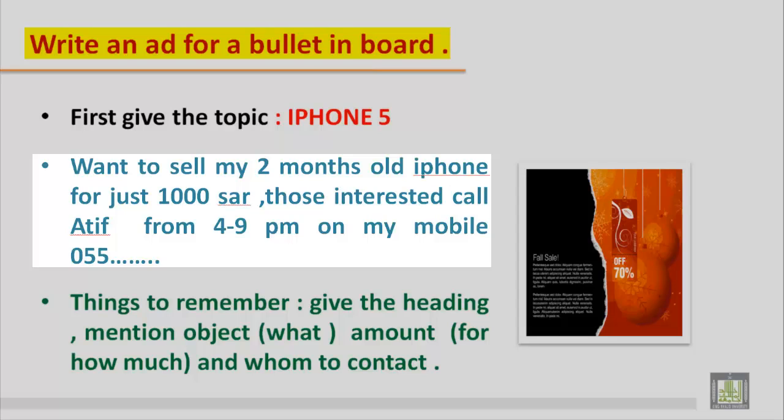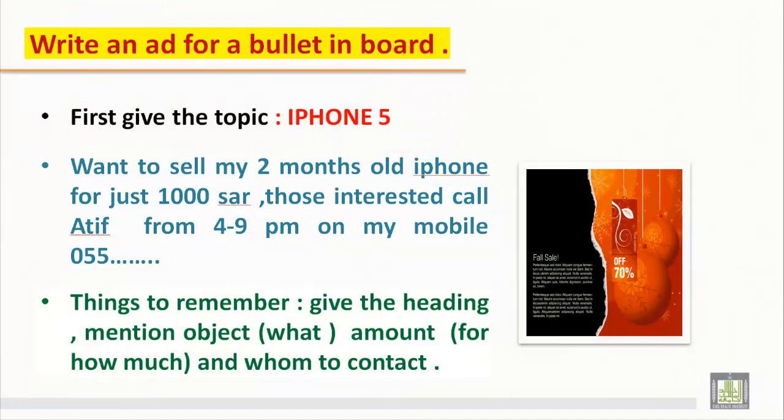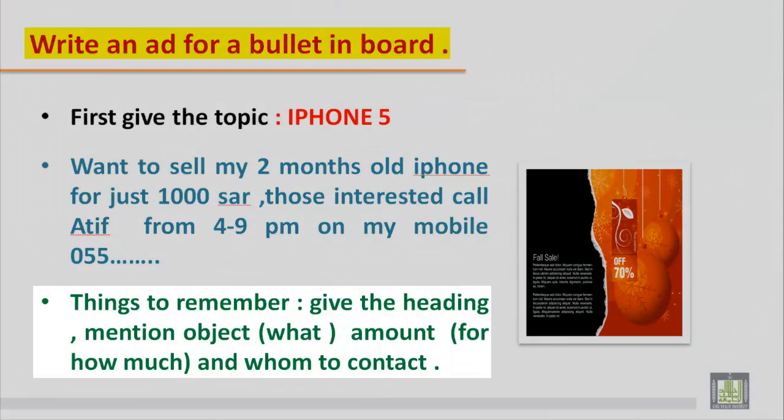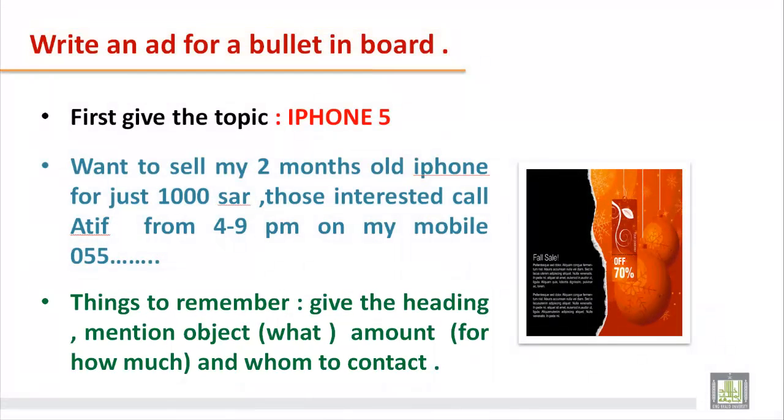Now as we saw in the beginning the objective, the second objective was you should have knowledge about prepositions. So preposition like you should know for, or how much, from - from 4 to 9 p.m., and on. So from we usually use for time, for like for how much, on like the person should call on your mobile.